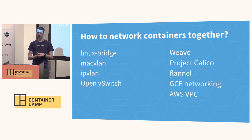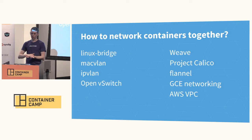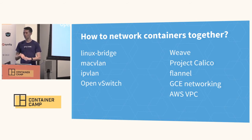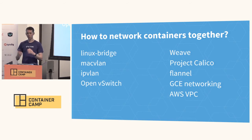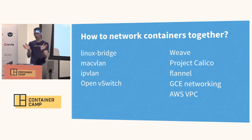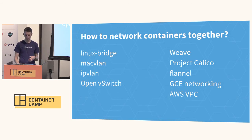CNI is an actual standard that defines how these networks are set up and then includes and works with a number of different projects. We're able to set up things using normal Linux bridges, MACVLAN, IPVLAN, OpenVSwitch, Weave — which is a company that does networking for containers — Project Calico, which also does networking for containers, Flannel, and then we interact with the cloud providers as well. So we provide this single interface that allows you to interact and connect L3 addresses with lots of different things. That's what CNI is built to do.